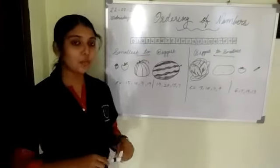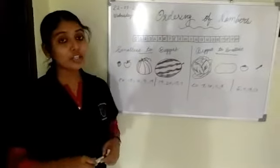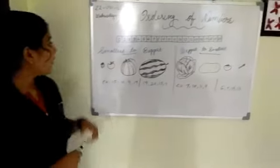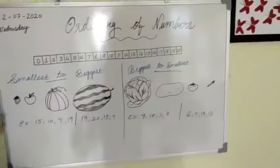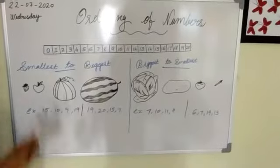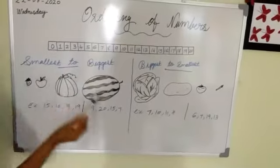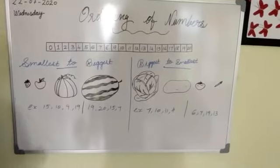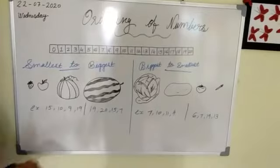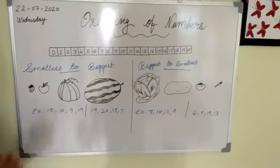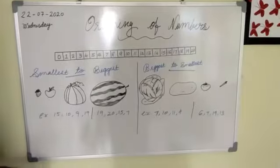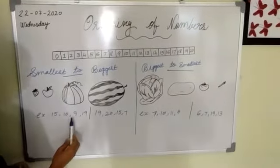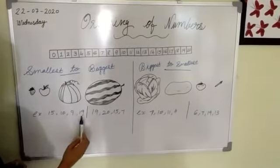Now we move on to the next topic: ordering of numbers. The first way is smallest to biggest and the next is biggest to smallest. Here these fruits are arranged from smallest to biggest in size and we can also arrange numbers from smallest to biggest. So for example: 15, 10, 9, and 90.